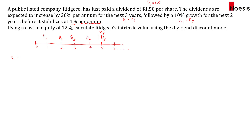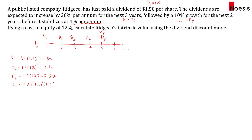D1 will be D0 ($1.50) multiplied by the 20% growth rate, so 1.5 × 1.2 = $1.80. Then D2 = 1.50 × 1.2² = $2.16. D3 = 1.50 × 1.2³ = $2.592. After that, for year 4 there is 10% growth, so D4 = 1.50 × 1.2³ × 1.1¹ = $2.8512.